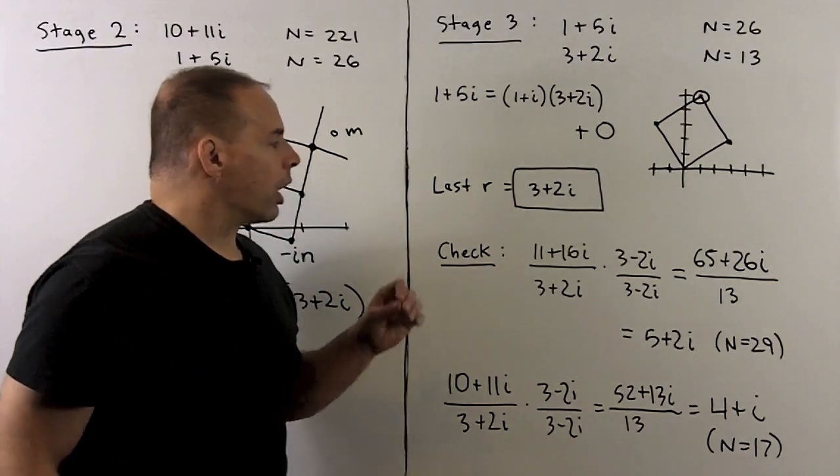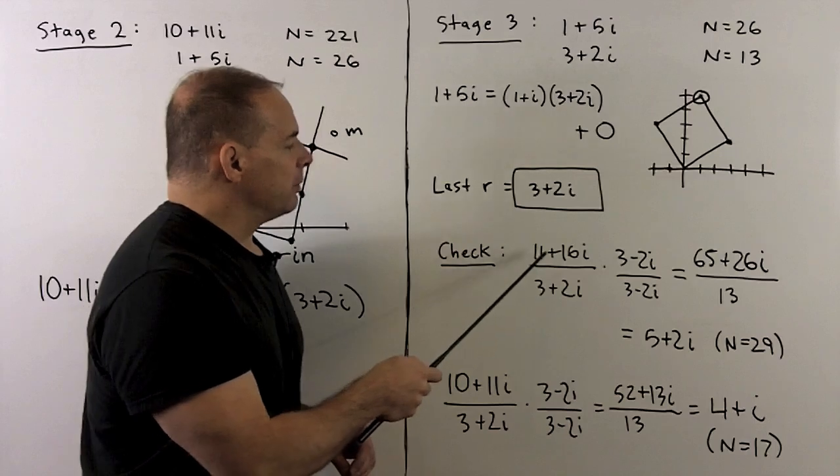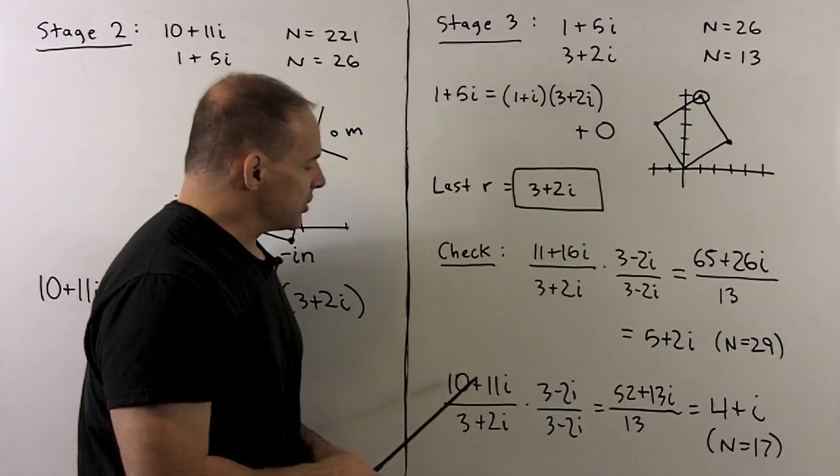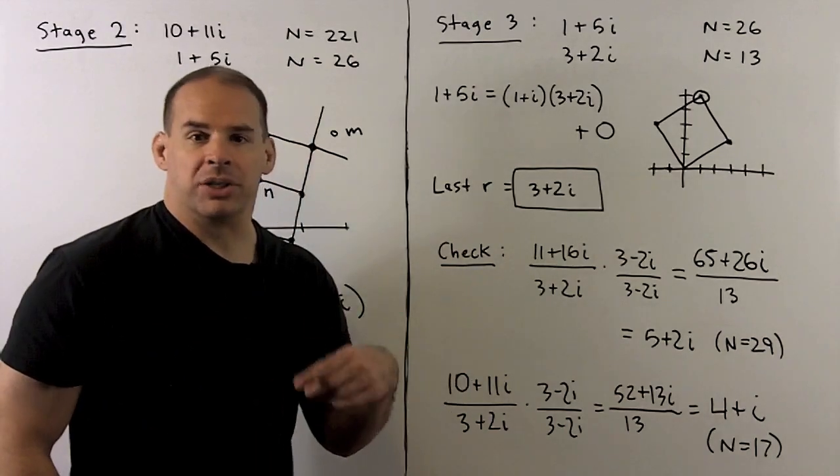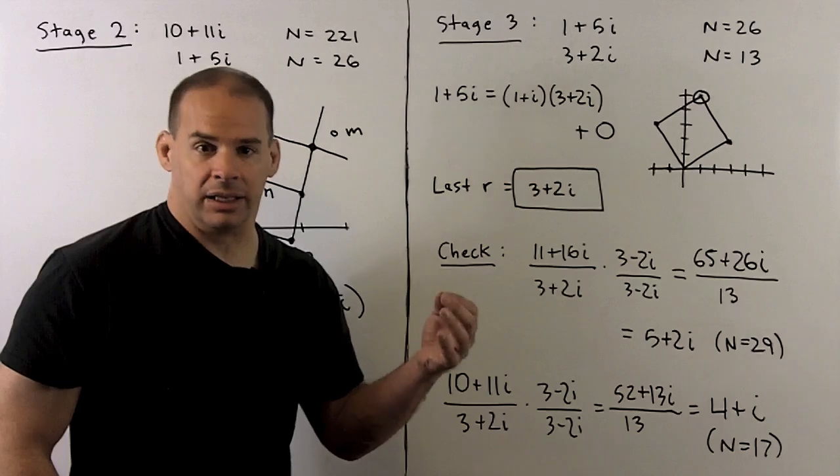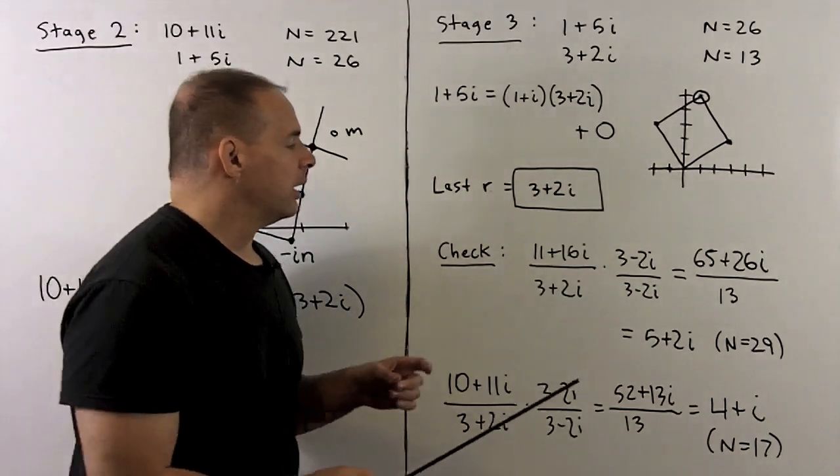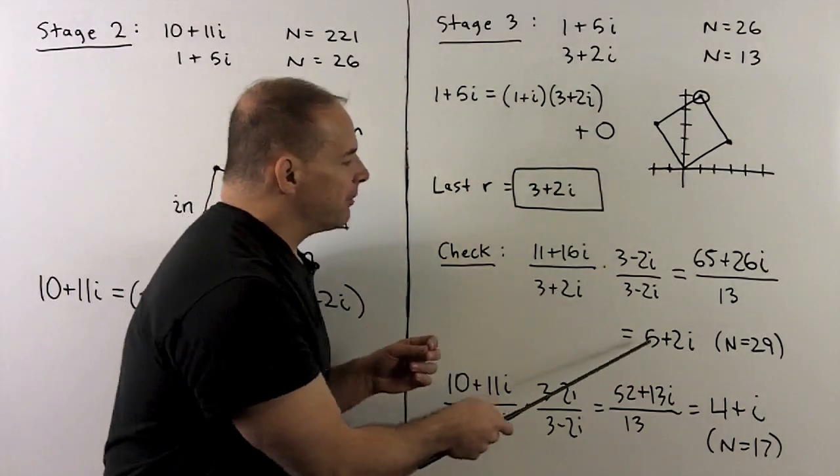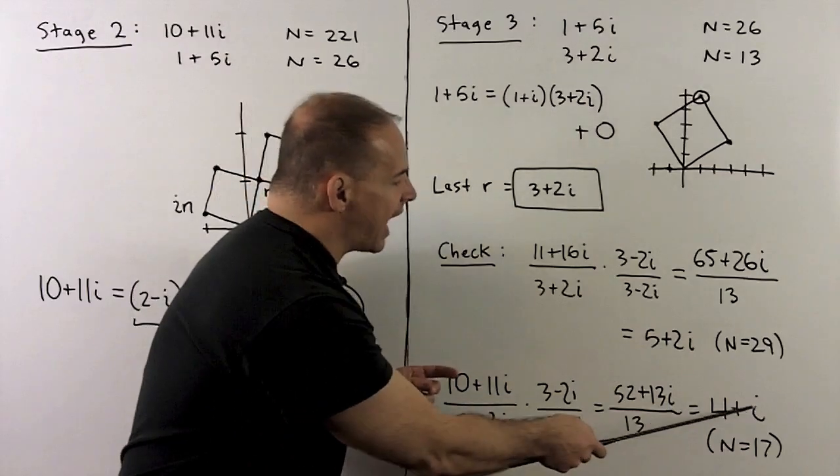Now, we check our work. If we take 11 plus 16i, 10 plus 11i, divide by 3 plus 2i, it should divide cleanly. We should get Gaussian integers out. Now we work these out. We get 5 plus 2i and 4 plus i.